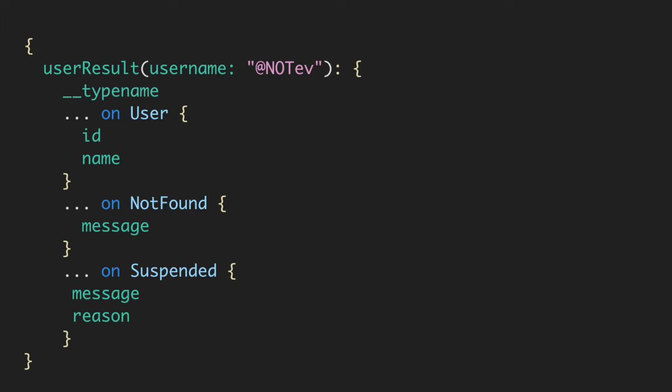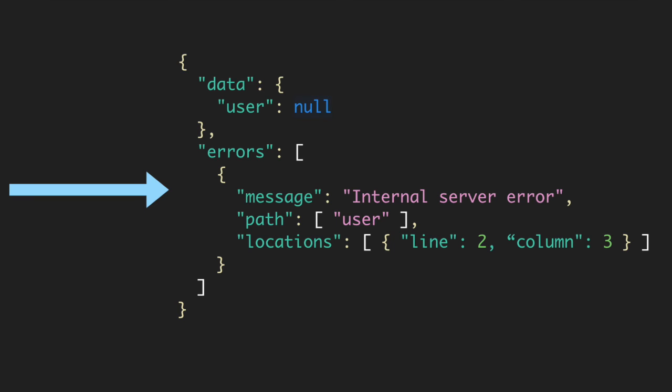So one last thing — what happens when we get some of those fatal errors? Again we're going to make the same query, but say our server is on fire or one of our microservices is not doing so hot. We'll make that query and we'll get something back like this — we've seen this before. So now we have this clear distinction between results that aren't really errors and things that are actually errors, which appear in the errors array.